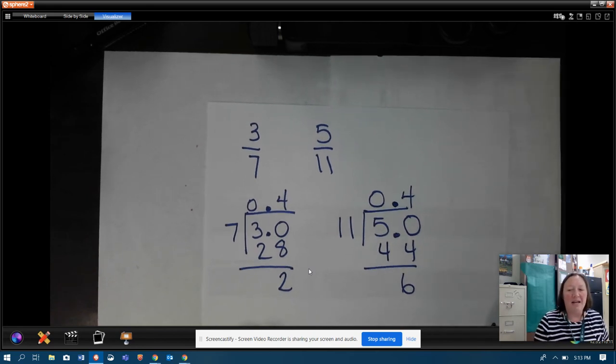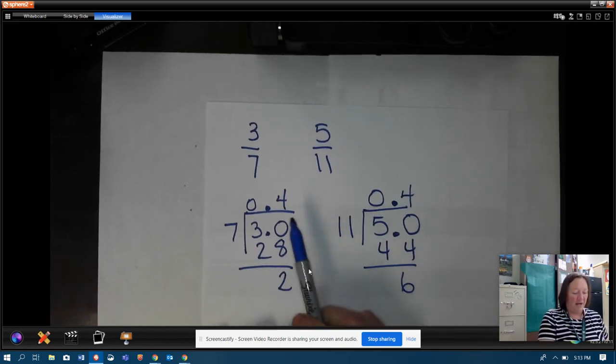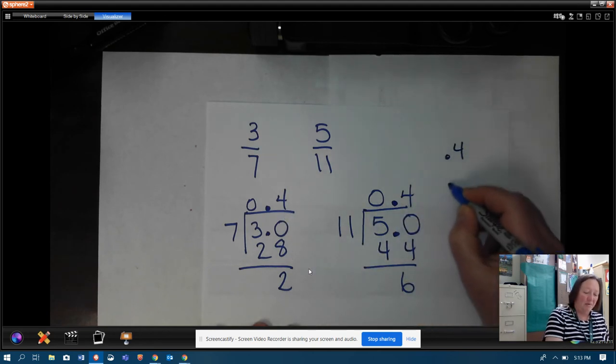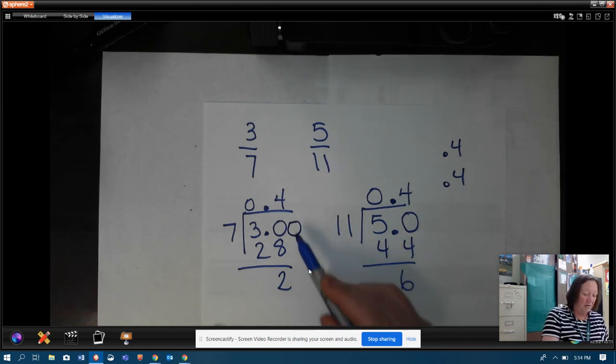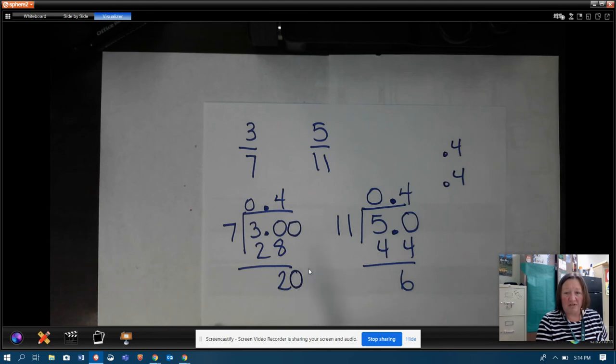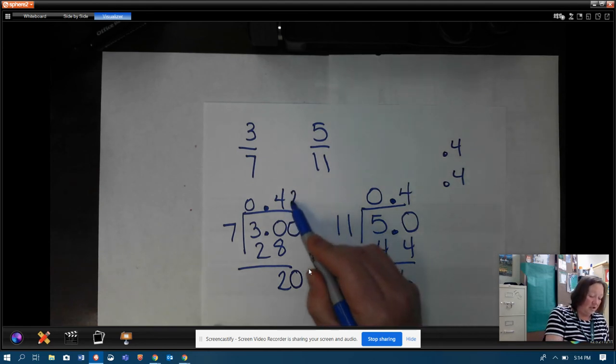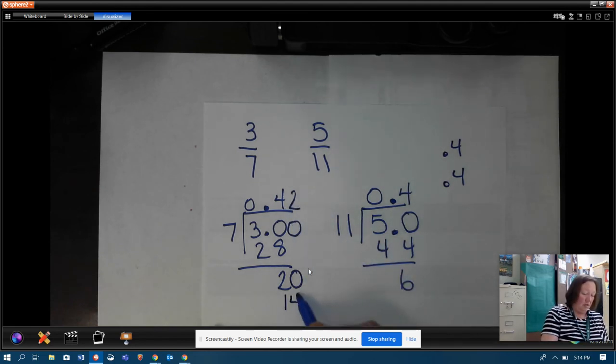Now, this time I cannot stop, because look what happens. I have point four and point four. If I line those up, they're exactly the same. So, I don't have enough information yet. So, I need to go out one more digit. So, I'm going to put another zero and bring it down. And how many times does seven go into twenty? Well, that's a two, right? And if I subtract, I'm going to have six left over.